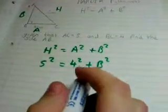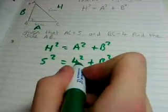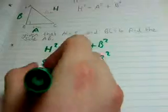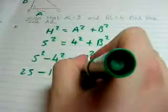Now, to get B squared, you minus the 4 on this side from the 5. So 5 squared minus 4 squared equals B squared. 5 squared is 25 minus 16 equals B squared.